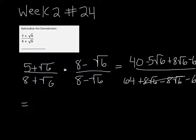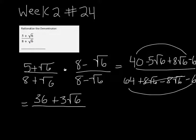So if we simplify, the numerator is going to be 40 minus 6, which is 36. And then negative 5 plus 8 would be positive 3 square root of 6. And then 64 minus 6 is 58.